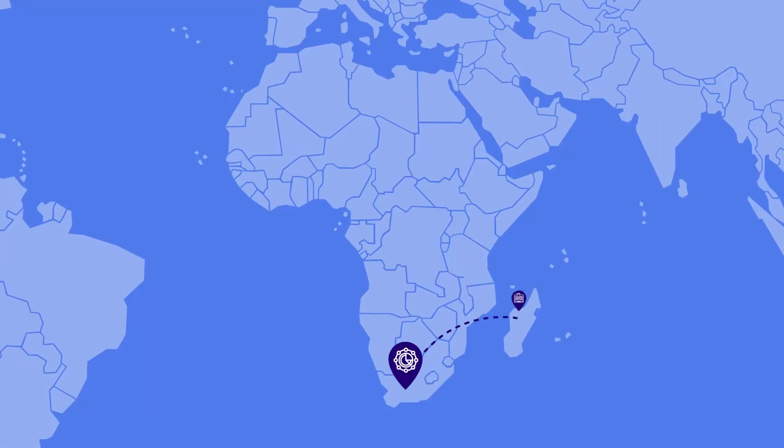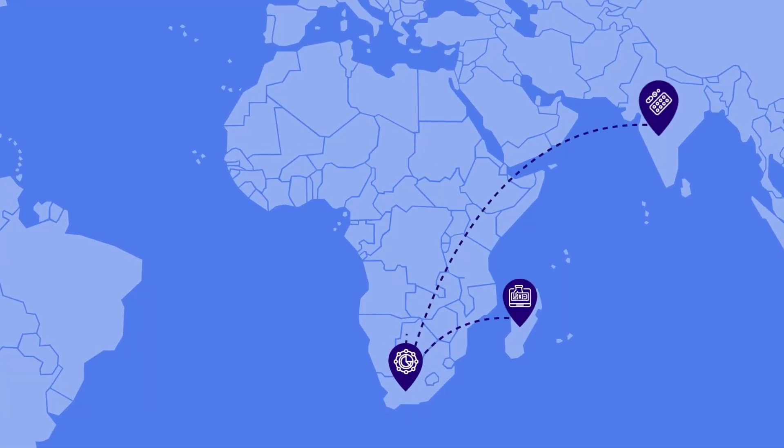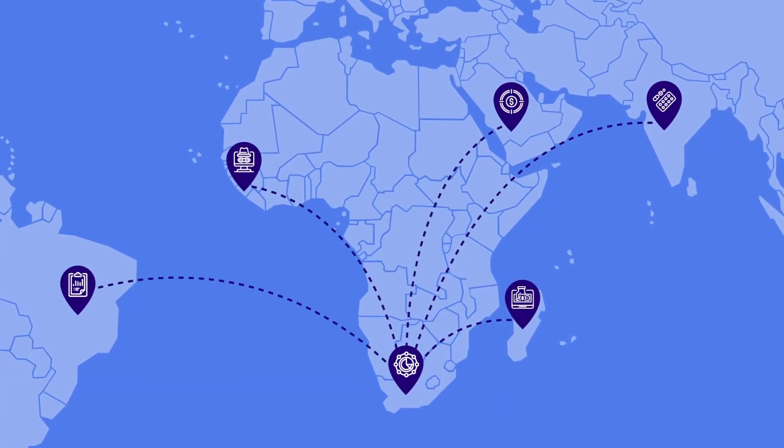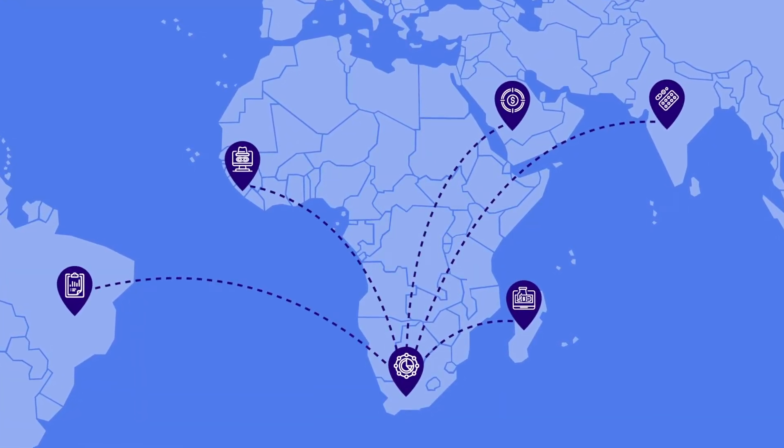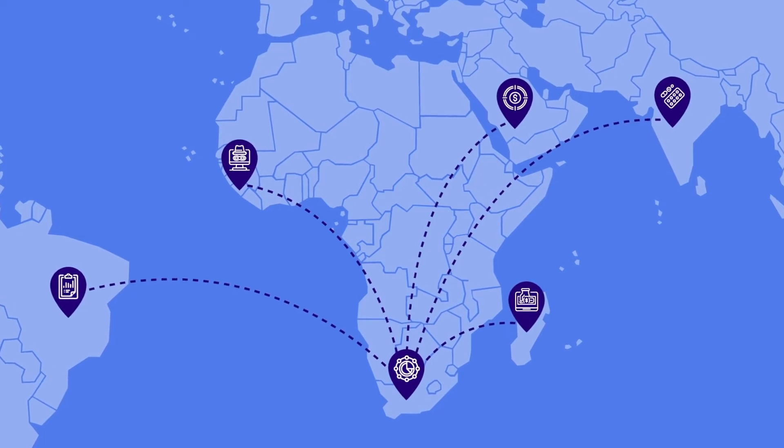What will be measured in each particular country will depend on their national circumstances — what illicit financial flows are prevalent in the country, what is the data availability, and what is the statistical capacity in the country. The work we are doing is not to set up new legal frameworks or definitions, but the focus is on the measurement.